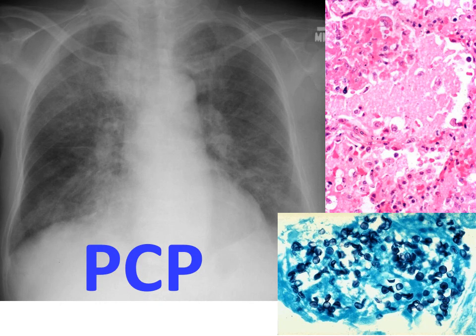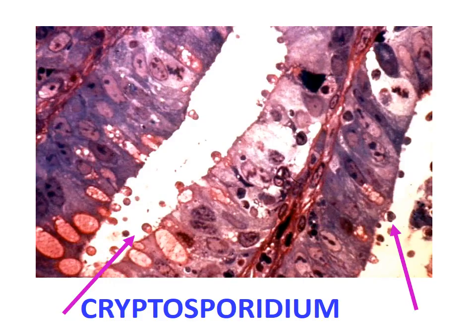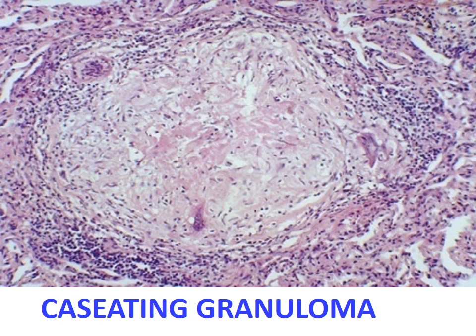Pneumocystis carinii pneumonia (PCP): the chest X-ray shows woolly or cotton woolly-like bilateral exudate. Histologically, there are dilated alveoli containing pink amorphous woolly-like exudate. When stained with silver stain, these show penny-like structures. Cryptosporidium is a protozoa — these round structures align themselves on the mucosal surface of the GI mucosa, causing sloughing off of the cell surface and diarrhea. This is a superficial infection as they do not invade inside the mucosa.